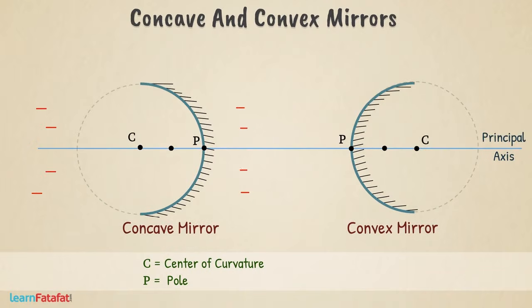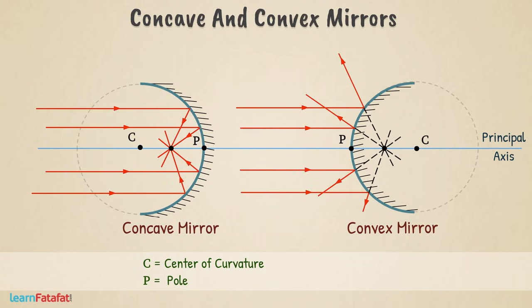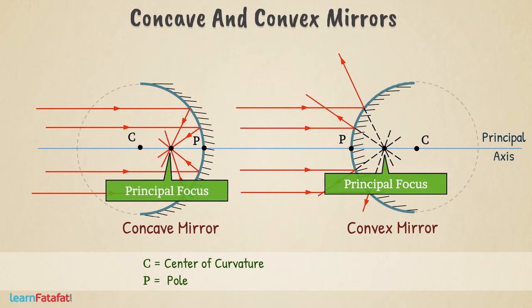Ray parallel to principal axis after reflection passes through a common point on the principal axis. It is called the principal focus of the mirror and is denoted by capital F.